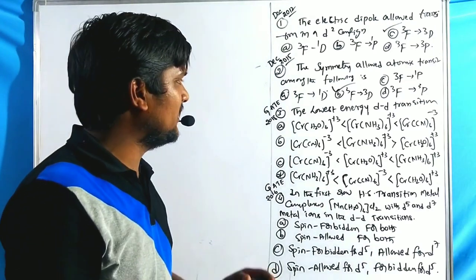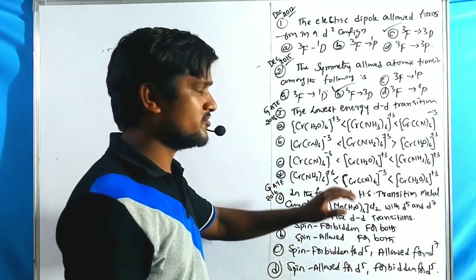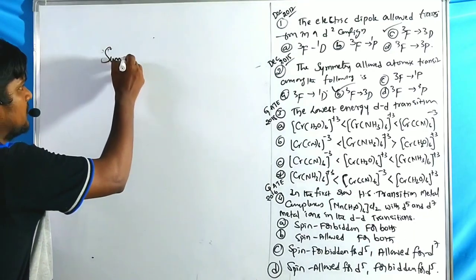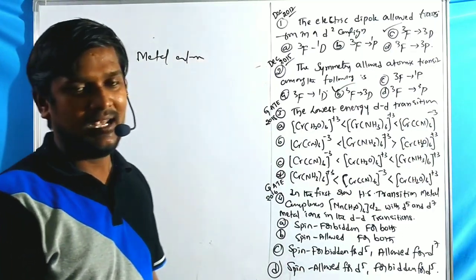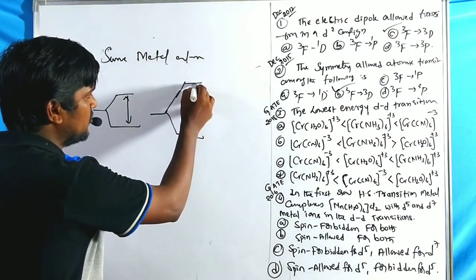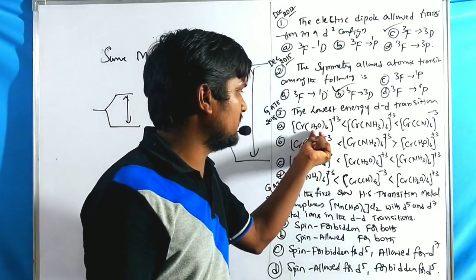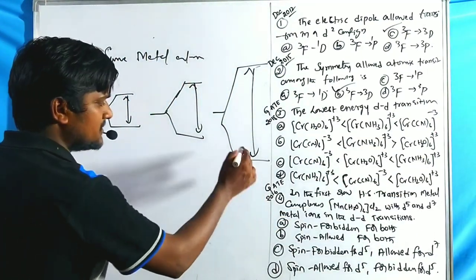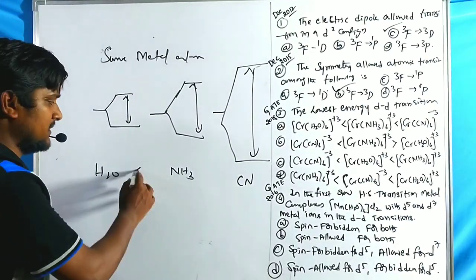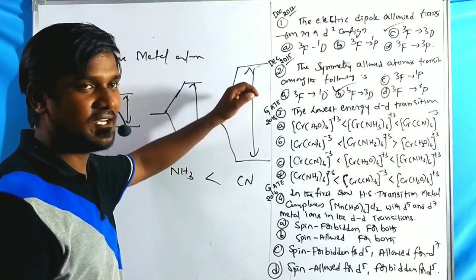Problem 3 is from GATE 2018: which complex shows the lowest energy d-d transition? All complexes have the same central metal atom but different ligands — water, ammonia, and cyanide. According to the spectrochemical series, cyanide has the largest crystal field splitting energy, ammonia is intermediate, and water has the smallest.